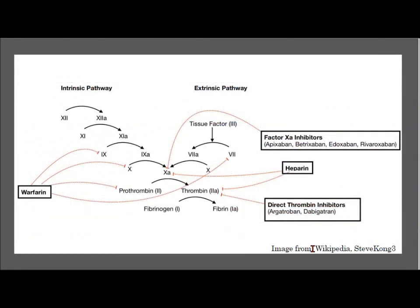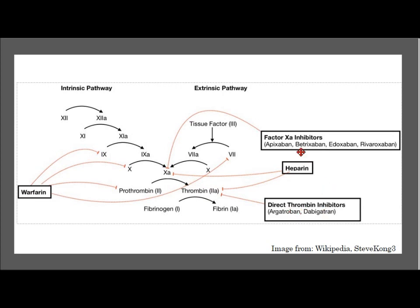This figure from Wikipedia by Steve Kong shows where these different anticoagulants act. Warfarin hits multiple factors, heparin hits two, and the DOACs — either factor Xa inhibitors or direct thrombin inhibitors — only hit a single agent.